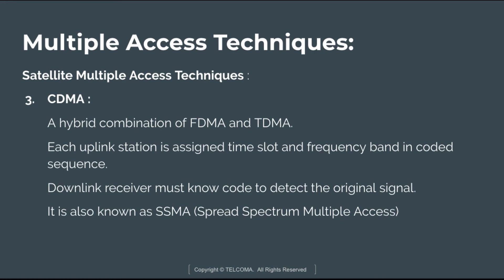The last primary technique is CDMA. CDMA is a hybrid combination of FDMA and TDMA — that is, a combination of both frequency and time separation. Each uplink station is assigned time slots and a frequency band encoded sequence, and the downlink receiver must know the code to detect the original signal. It is the most complex technique to implement, requiring several levels of synchronization at both the transmission and reception levels. It is also known as Spread Spectrum Multiple Access (SSMA).